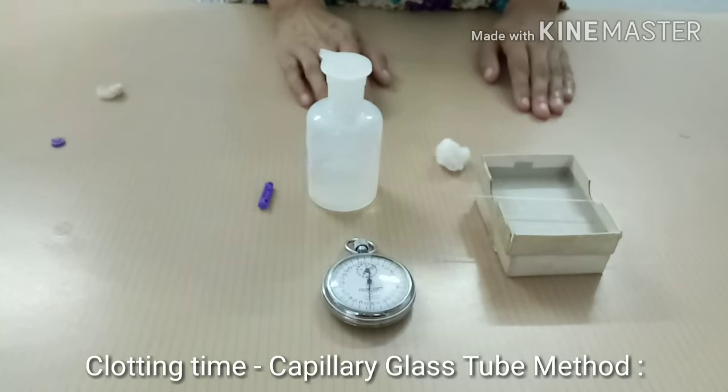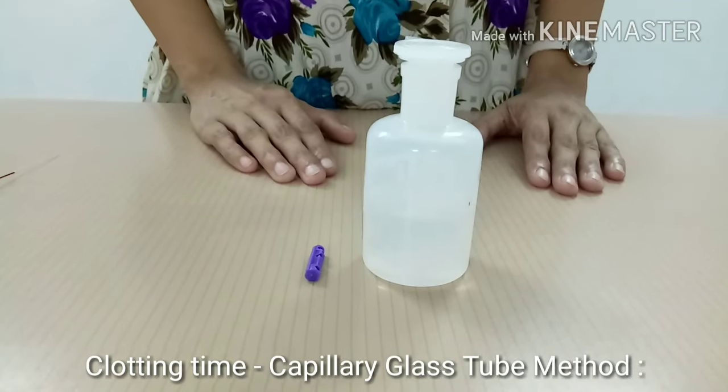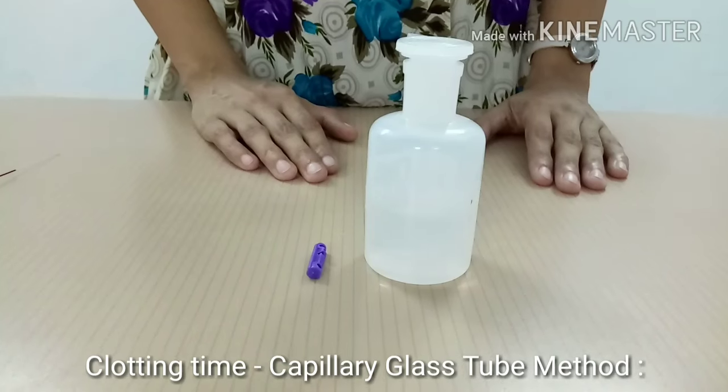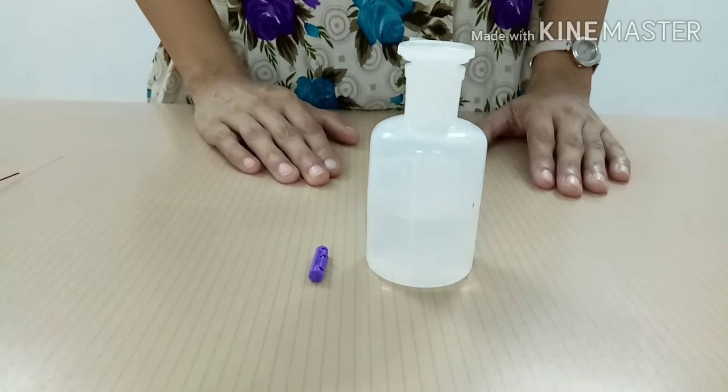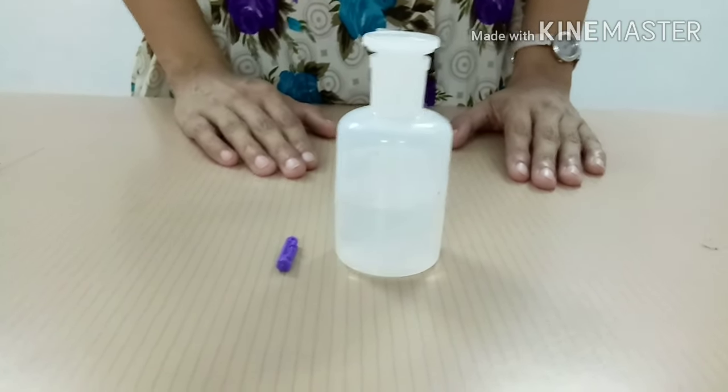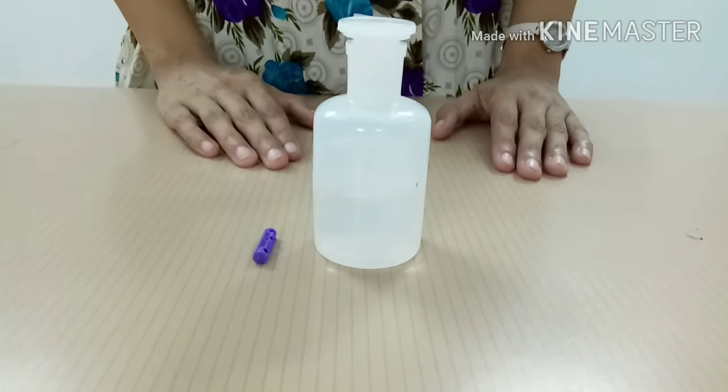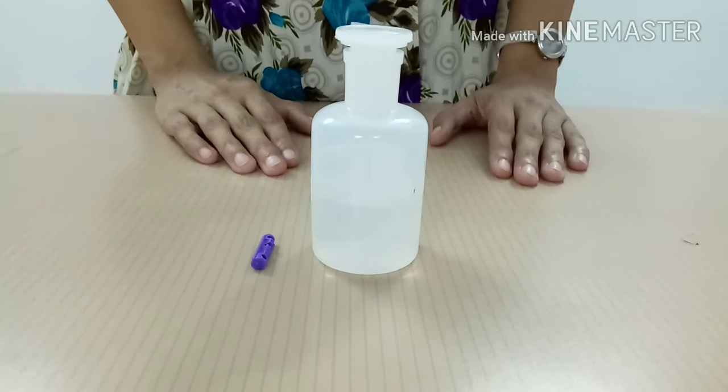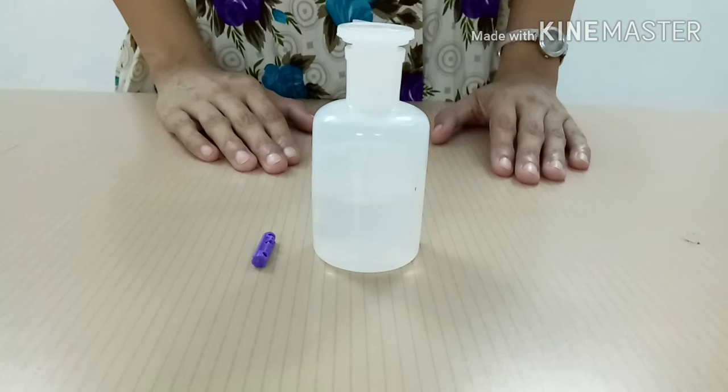Let us perform clotting time by capillary glass tube method. Principle: A skin puncture is made and blood is taken into capillary glass tube. The length of time that it takes for the blood to clot is known as clotting time.